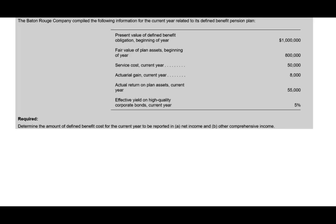Let's take a look at this example. Determine the amount of the defined benefit cost — the expense for the current year to be reported in net income and other comprehensive income. They want you to identify the net income component and the OCI component. We are given the obligation, the assets, service cost for the current year, actuarial gain for the current year, actual return on plan assets, and the effective yield on high-quality bonds.